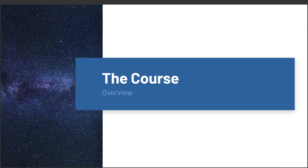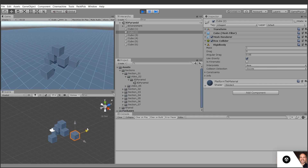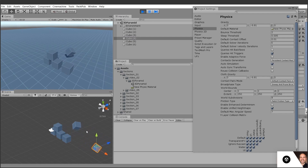Let's take a look at the course overview. In section one, Introduction to Physics, we'll look at the benefits of creating physics-based games. We'll look at the three major concerns of any physics system, and we'll review Unity's physics system and project setup.